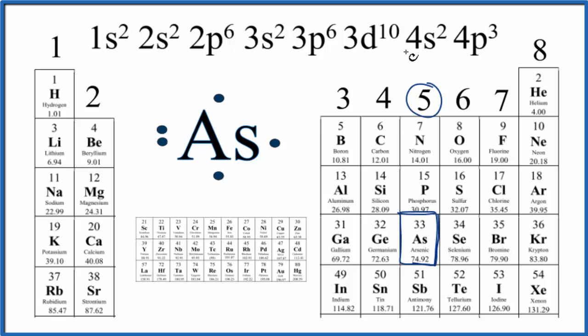And the highest energy level, that's the fourth energy level right here, has two plus three. That gives us five, which is what we found when we looked at the periodic table.